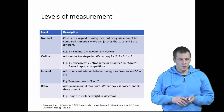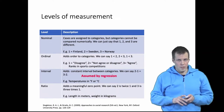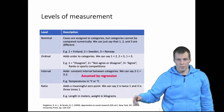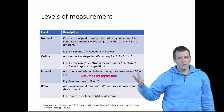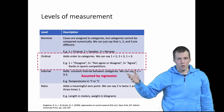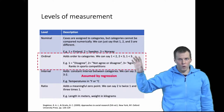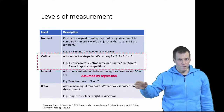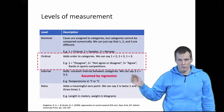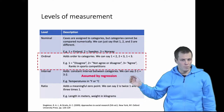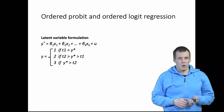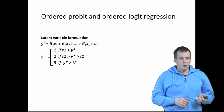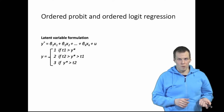Regression analysis assumes interval measurement and also works with ratio measurement, because all ratio measurement is also interval measurement. What if we have ordinal measurement? We know the order but we don't know the differences between categories. The typical tools applied for ordinal models are ordered probit regression and ordered logistic regression.